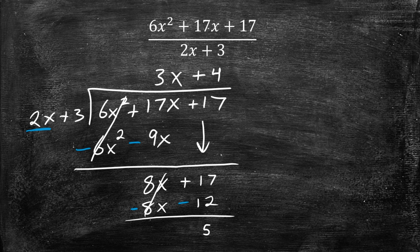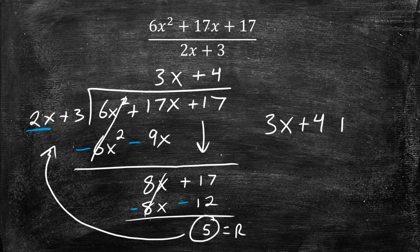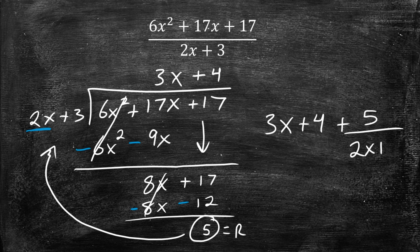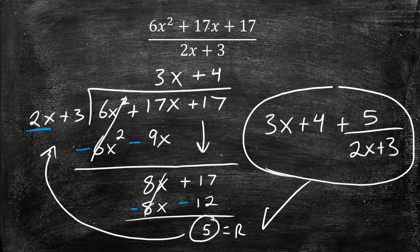So if you look at this, 2x cannot go into 5. So this right here, this 5 is our remainder. And whenever we have a remainder, we just add that to the end of our answer and we put it over what we are dividing by, so that 2x plus 3. So our answer is going to be 3x plus 4, we still have that remainder, so we have to put plus 5 over what we were dividing by, which is 2x plus 3. This is going to be our final answer. Therefore, this example is complete.